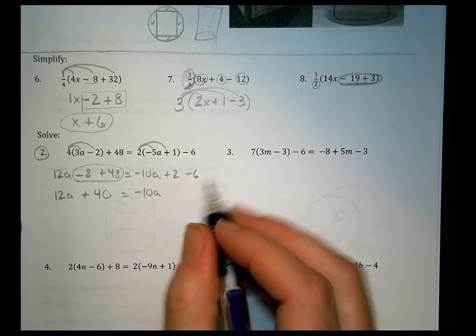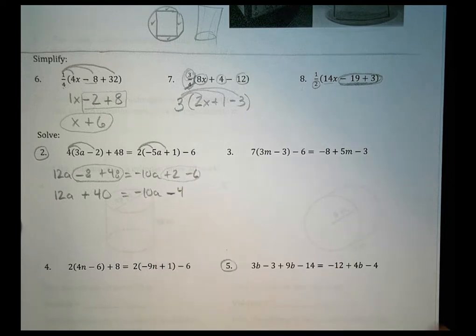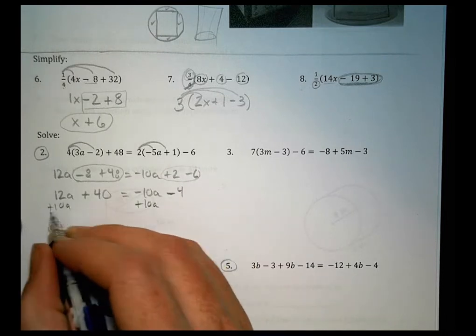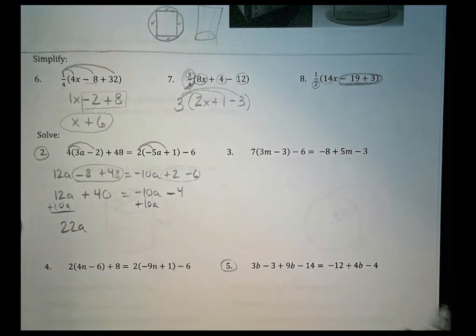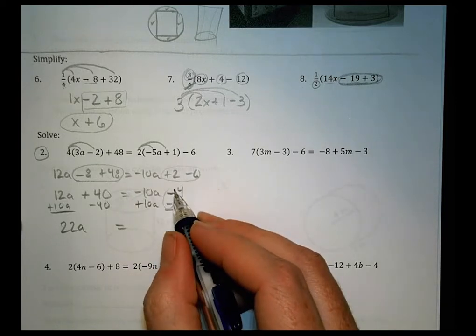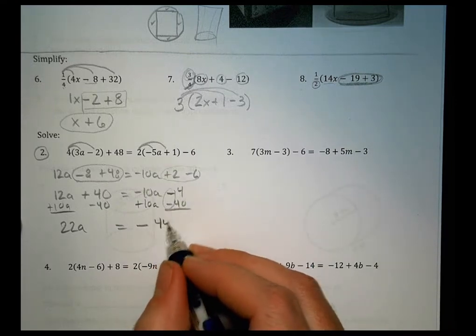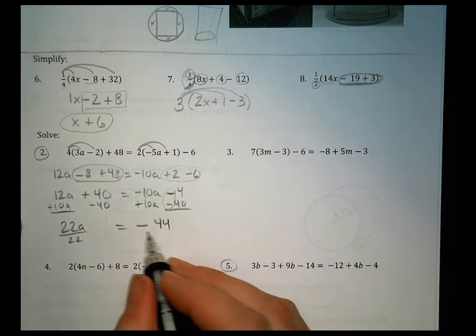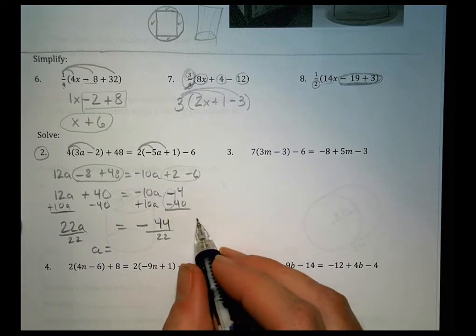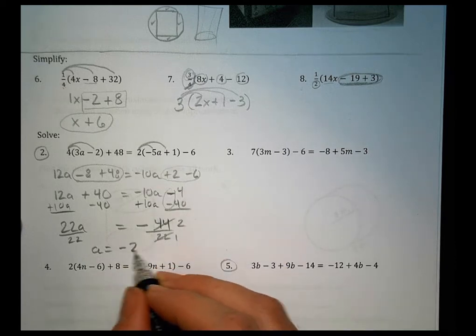Now we're going to move some things around. Let's add the 10a to both sides, which leaves me with 22a over here. Let's subtract 40. Notice the signs are the same, so I'm going to find the sum and keep the sign the same. So 40 plus 4 is 44. Divide both sides by 22, so a equals negative 44 over 22. Well, 22 goes into 44 two times, so you end up with simply negative 2 as a solution.